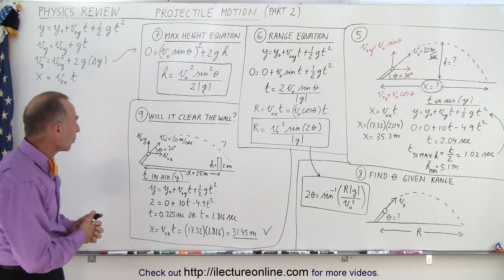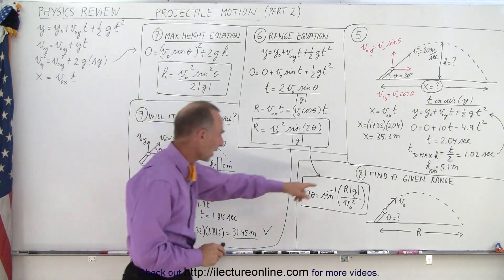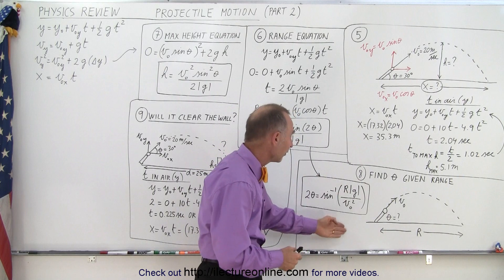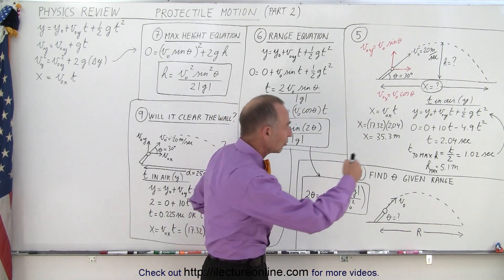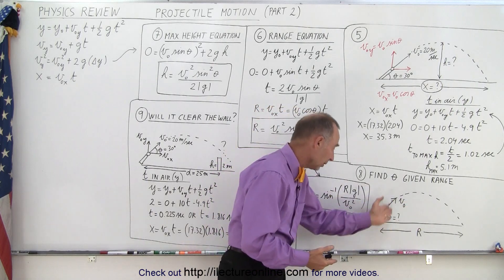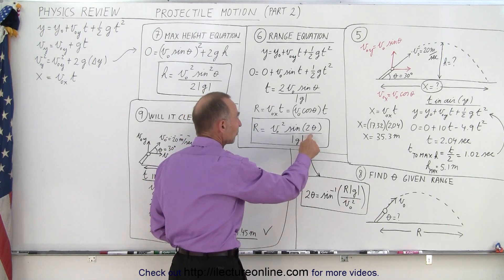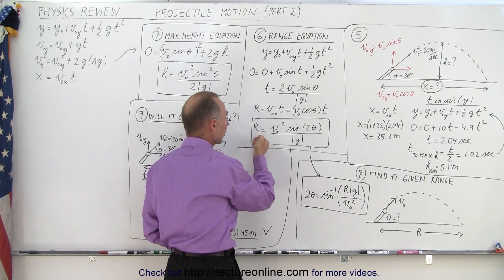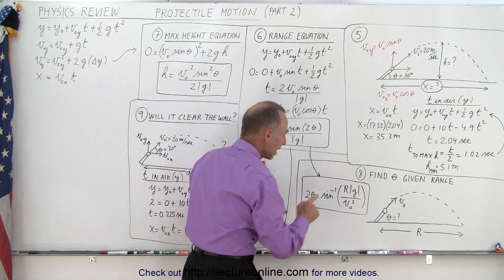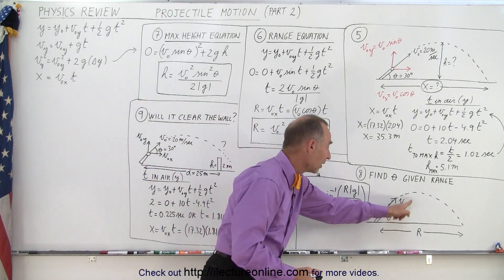A typical problem you may run into is Example 8: finding the angle given the range. Let's say the projectile reached a particular range and you're given the initial velocity — what angle do you need to shoot at to reach that given range? Take the range equation and solve it for the angle: multiply r times g divided by v-initial squared to get the sine of 2-theta, then take the inverse sine of that quantity. So 2-theta equals the inverse sine of that value, and that's how you find the unknown angle given the distance and initial velocity.